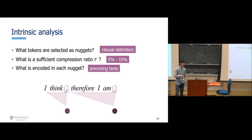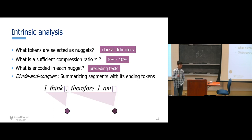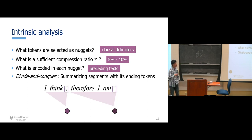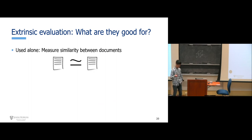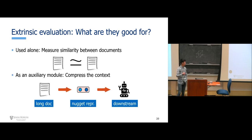To summarize the intrinsic evaluation: the tokens selected as Nuggets are text delimiters; the sufficient compression ratio is 5 to 10%; and each Nugget encodes roughly its preceding text. With this evidence, we conclude that Nugget is learning a divide-and-conquer solution — it splits text with delimiters and summarizes each text segment with its ending token. This whole procedure is learned unsupervisedly without any guidance.